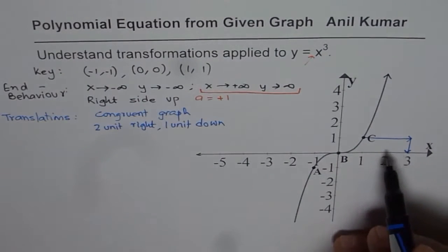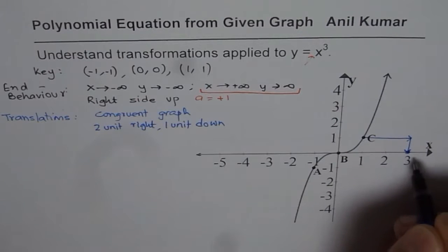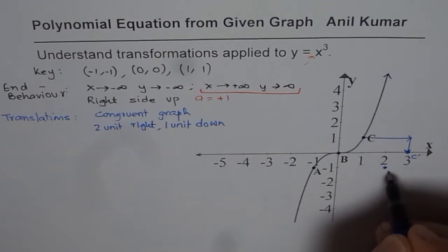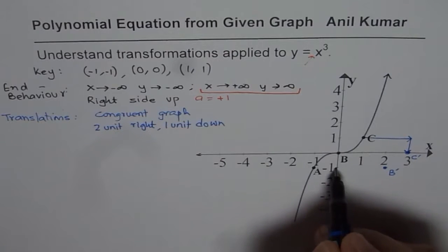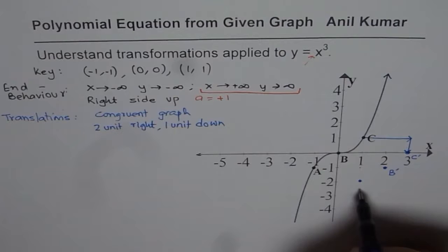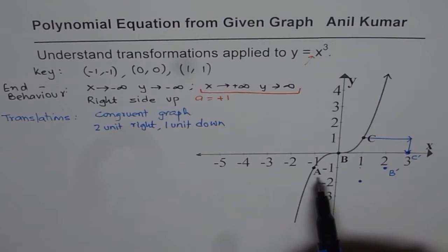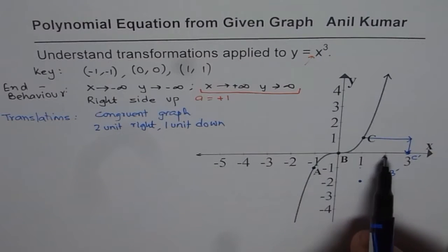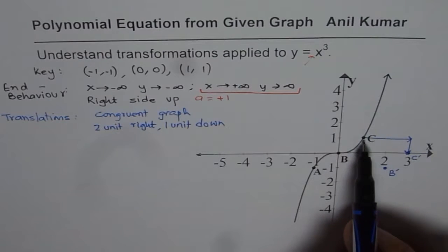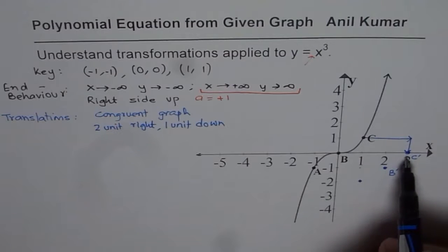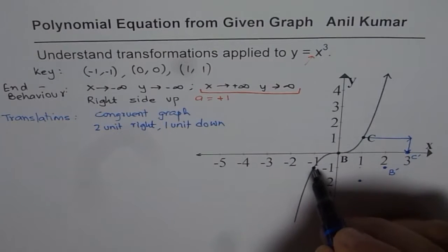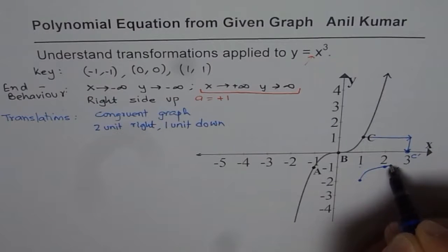Each point moves accordingly. C moves to C dash. B moves 2 units right and 1 unit down to B dash. A, which was at minus 1, moves 2 units right to plus 1, and 1 unit down to minus 2 — giving A dash at (1, minus 2). The origin B moves to (2, negative 1). The point at (1,1) moves to (3, 0). The shape of the graph remains the same.